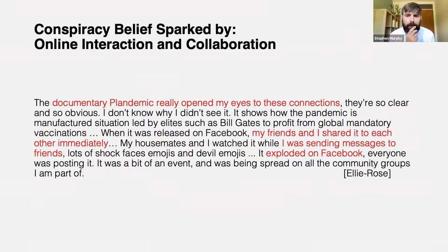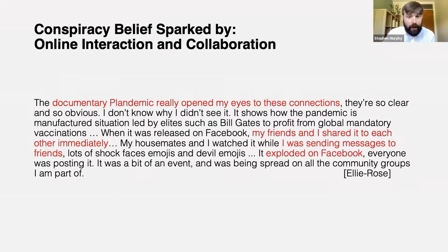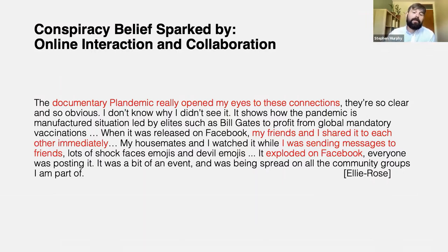The second big idea that pops up is around the significance of online interaction and collaboration. Data from Ellie Rose's interview gives real insights into how people interact with other truth-seekers in online communities. Most participants first encountered conspiratorial content when they were shared videos or documentaries by friends or close acquaintances over social media. One of the ways we make shortcuts about information we choose to trust is when it's shared from close acquaintances — we tend to place too much value in terms of trust around those things.